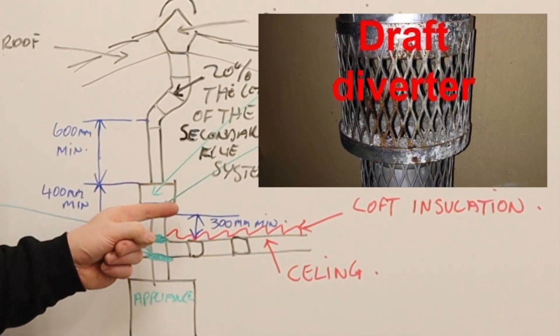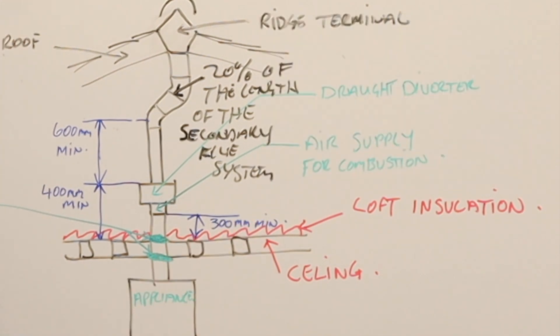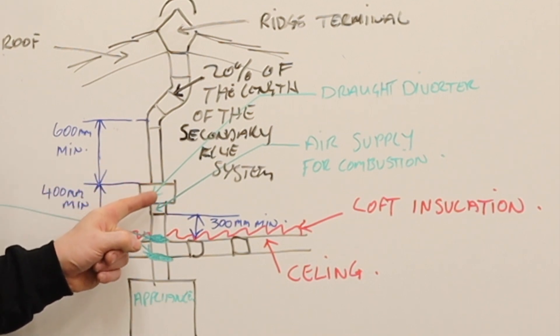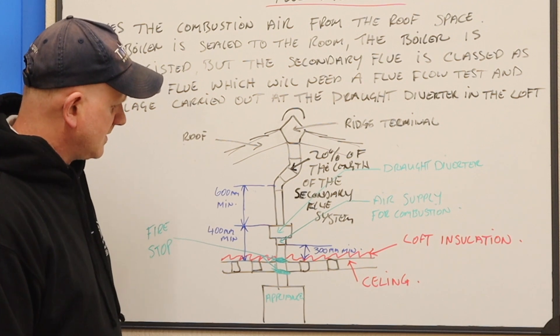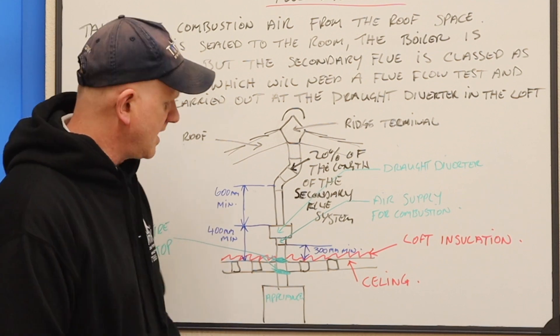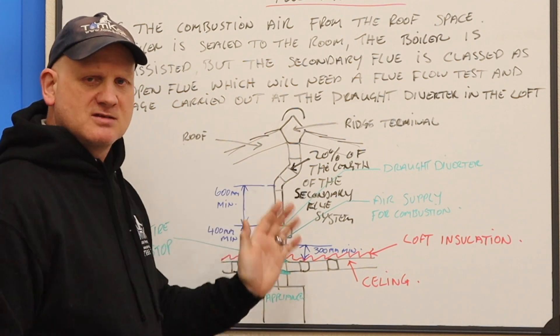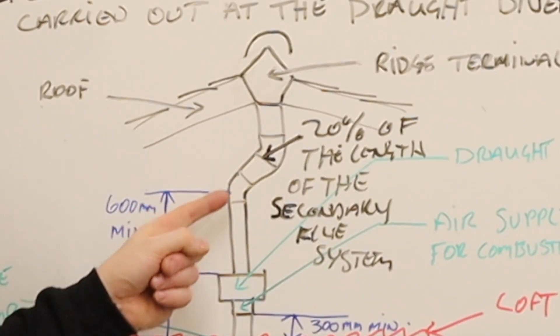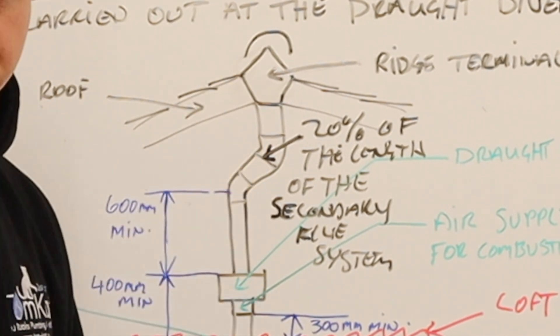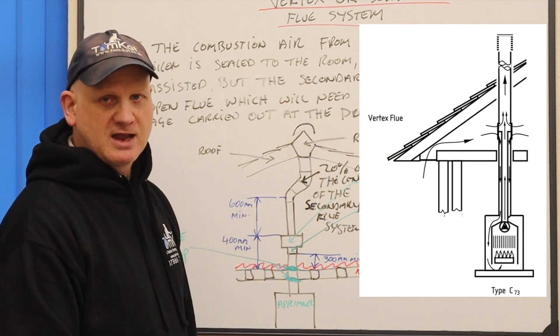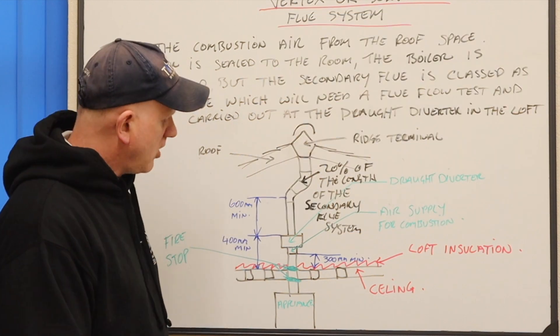This air supply has to be more than 300mm from the bottom of the air supply to the top of the insulation. But the draft diverter, which is this bit here on the top, has to be more than 400mm off the top of this insulation - two of the major things you need to look at. Because this secondary flue system is like an open flue appliance, we need a minimum rise above the draft diverter of 600mm before any bends, and again 45 degrees, no more than 45 degrees. But this distance here between the two flue systems cannot be more than 20 percent of the total length of this secondary flue system. This flue system could actually just go straight up through the roof and terminate with a normal terminal or we can go to a ridge terminal.